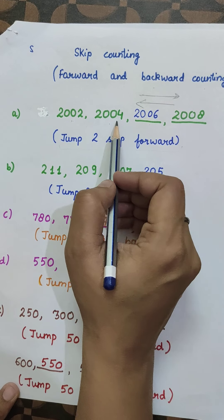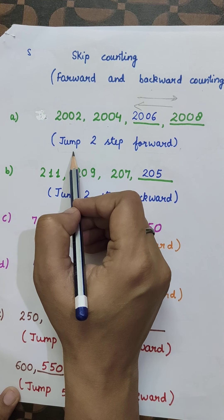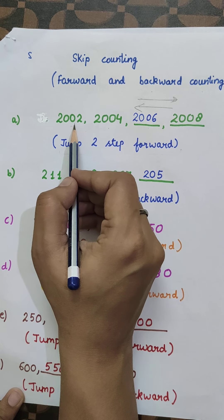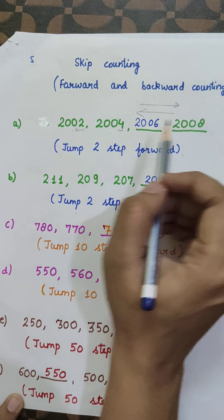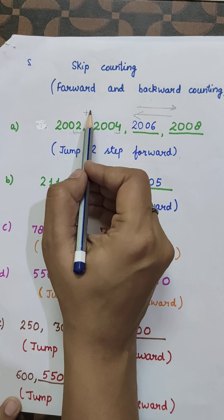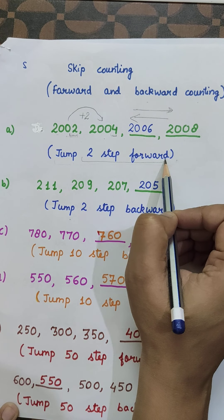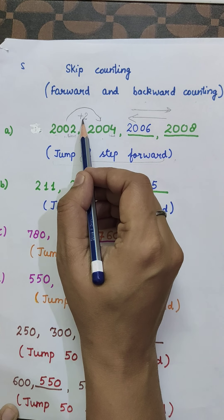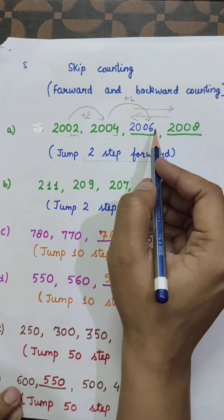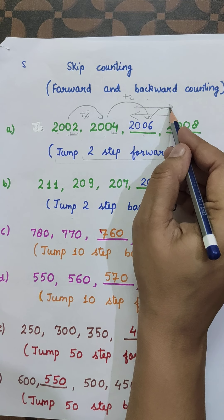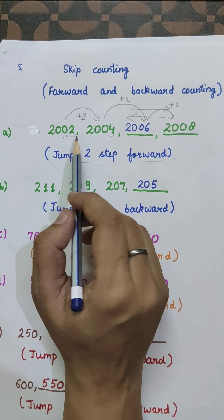So: 2002, 2004 — we don't know what comes next, then 2008. Two steps forward means we add plus two each time. 2002 plus 2 is 2004. 2004 plus 2 is 2006. 2006 plus 2 is 2008. So our answer is correct: 2002, 2004, 2006, 2008.